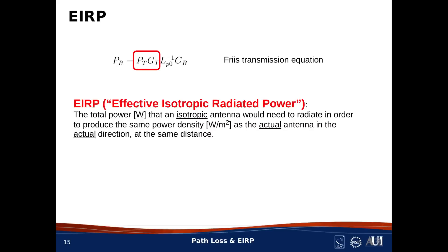You can see, just from inspection, that EIRP is the total power that an isotropic antenna would need to radiate in order to produce the same power density, that is, the same number of watts per square meter, as the actual antenna in the actual direction at the same distance.